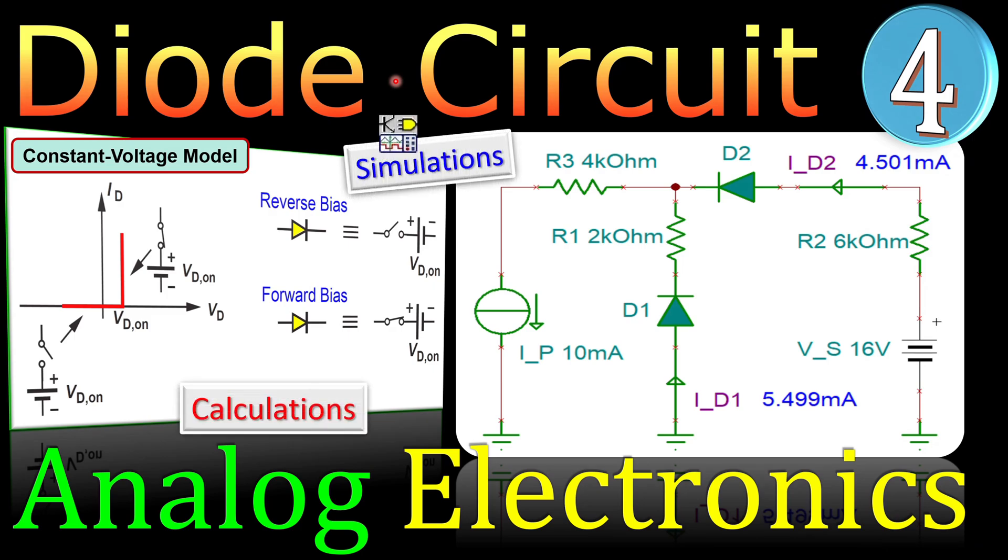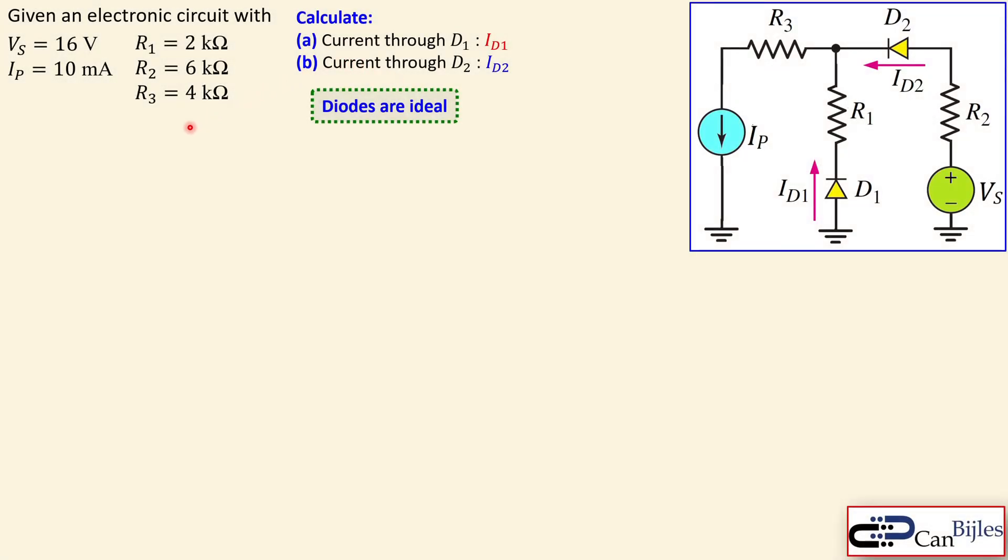Let's look at our circuit. We have two sources, one is the VS DC voltage source and IP which is the DC current source. We have three resistors R1, R2, and R3, and the values are shown here. We need to calculate the current through D1 diode one in this direction and the current through diode 2, which is ID2.